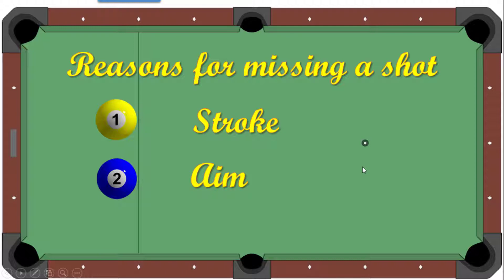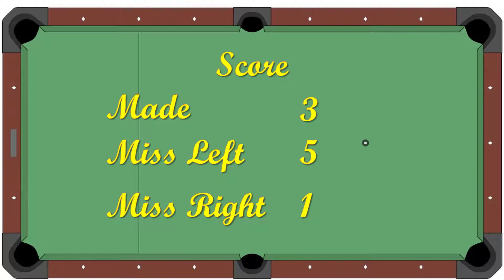During your session you were asked to take nine straight-in shots. Straight-in shots were selected to eliminate aim as a cause for a miss. Of those nine shots, you made three. You missed five to the left of the pocket and one to the right of the pocket.